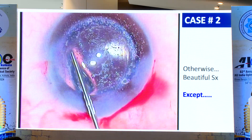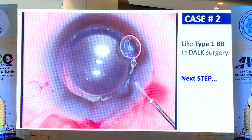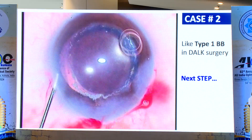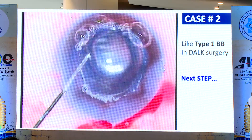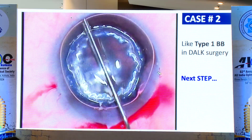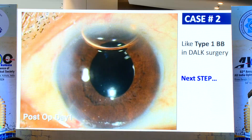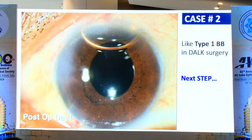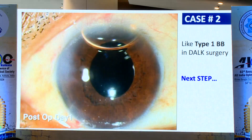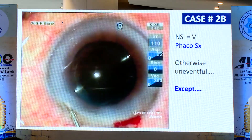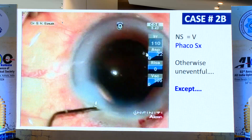When you miss the earliest sign of Descemet's detachment and keep injecting fluid, it will increase. I identified it in the OT and the next step was to inject air. Whenever there is a Descemet's detachment, understand that the air bubble should not go within the space between the cornea and Descemet's — this is a very important step. If air goes between the cornea and Descemet's, it will cause total detachment. Make a clear corneal entry carefully.